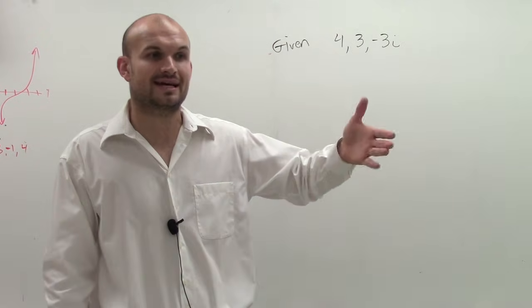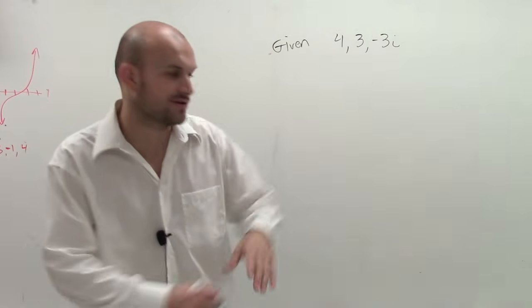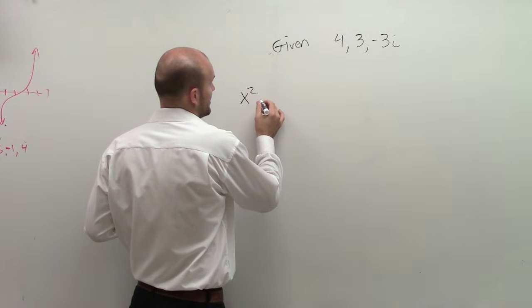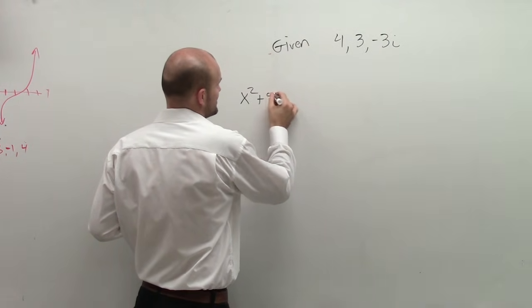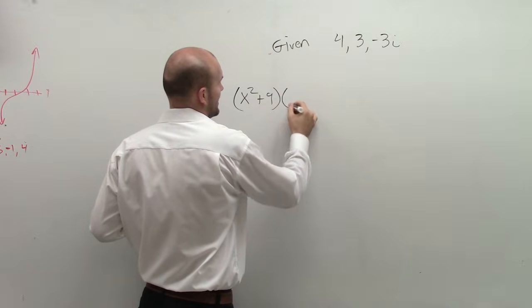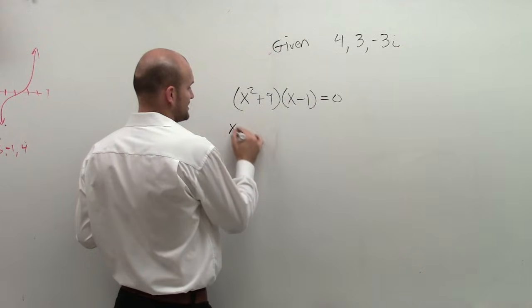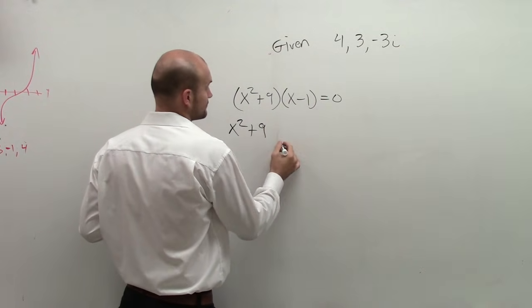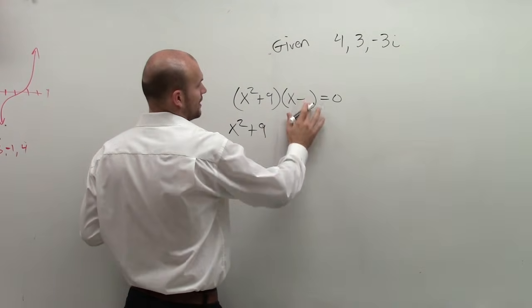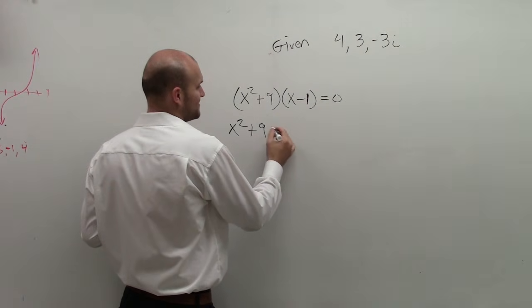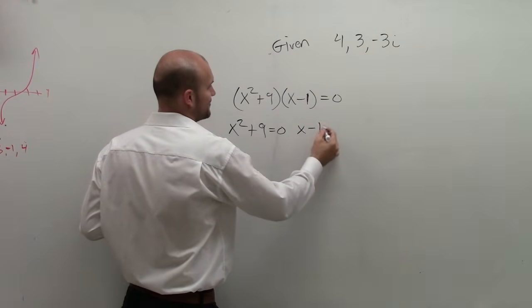So we need to remember, how did we go from factors to zeros? Well, remember, let's say I have x squared plus 9, and then I had x minus 1 equals 0. You guys may remember this. Remember, the first thing we do is set the zero product property. Equals 0, and then you say x minus 1 equals 0.